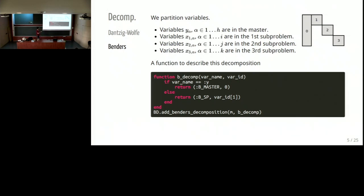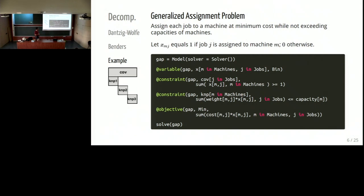Let's illustrate that with an example: the generalized assignment problem. This is the model in JuMP. We introduce the variable x_mg, which equals one if job g is assigned to machine m. Here we have covering constraints: each job must be assigned to a machine. Here are the knapsack constraints: we cannot exceed the capacity of each machine. We aim to minimize the total cost of the assignment. The structure of the coefficient matrix is block diagonal. If we remove the covering constraints, it remains independent knapsack constraints — one knapsack constraint for each machine. So we are going to decompose over the machines.